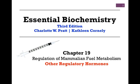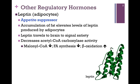We're continuing our studies in chapter 19 on the regulation of mammalian fuel metabolism, and in this lesson we want to consider some of our other regulatory hormones. Each of the hormones we'll consider in this lesson are produced within adipocytes, our fat cells. Previously it was considered that these cells were simply fat storage depots for long-term storage so we could access them later when we had a need. What we're coming to understand, however, is that these adipocytes are actually an important part of our endocrine system, producing several important regulatory hormones.